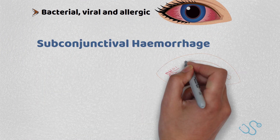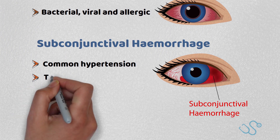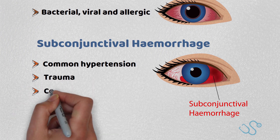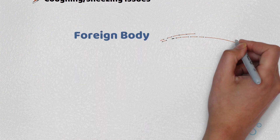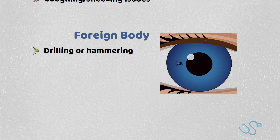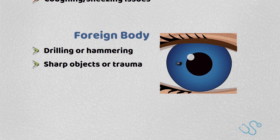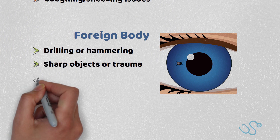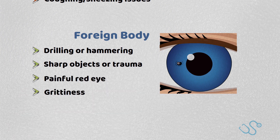Subconjunctival hemorrhages are common, particularly in those with hypertension, or with trauma, or with coughing and sneezing bouts. Foreign bodies often follow a history of drilling or hammering, or the use of relatively sharp objects or trauma. There'll be a painful red eye with a sense of grittiness or foreign body in the eye, and this is usually dealt with by the urgent eye clinic.